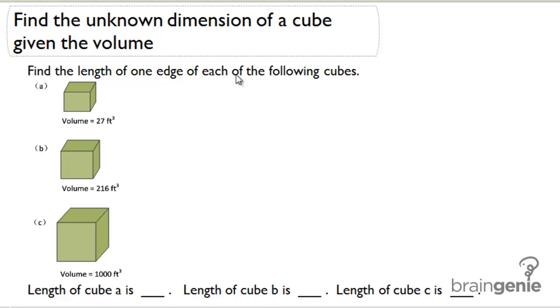Now we're going to work backwards. Instead of using a cuboid, we're going to go back to a cube. We're going to find the unknown dimension of a cube given the volume. Let's remember that formula we've talked about: volume equals length times width times height.